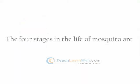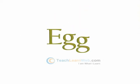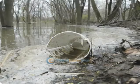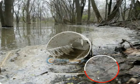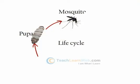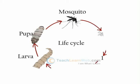The four stages in the life of a mosquito are: Egg — a female mosquito lays about 300 eggs in stagnant water. These eggs hatch into larva in 1–3 days.